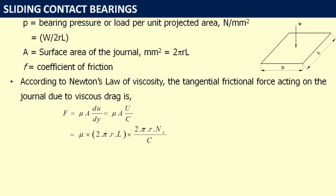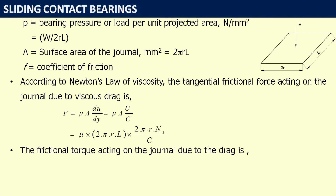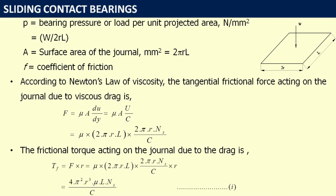Substituting values of A and surface velocity U, we get F = μ·(2πrL)·(2πr·Ns)/C. The frictional torque acting on the journal due to drag is Tf = F·r. Substituting the value of F, Tf = μ·(2πrL)·(2πr·Ns)/C · r. Simplifying, the frictional torque equals 4π²r³·μ·L·Ns / C. Let us call this Equation 1.